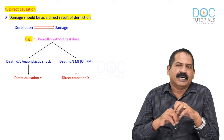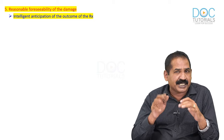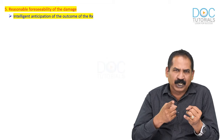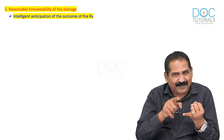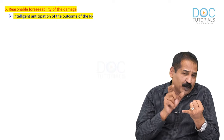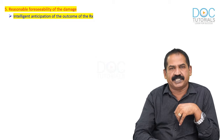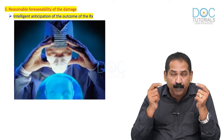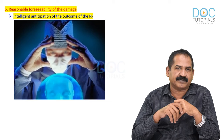Number five is reasonable foreseeability of the damage. Reasonable foreseeability means intelligent anticipation of the outcome of treatment. If you study properly you will pass your exam; if you don't, you won't — that is foreseeability. Similarly, using medical knowledge, I should know that if I give a penicillin injection without a test dose, the person may die of anaphylactic shock. That is reasonable foreseeability.